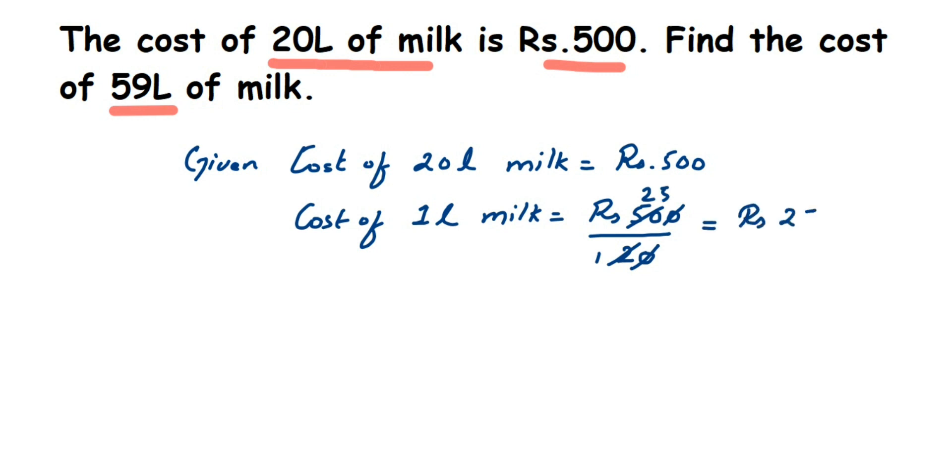So we have got that for 1 liter it is 25 rupees. Then for 59 liters what will be the cost? You have to just multiply. 1 liter we got 25 rupees, so for 59 liters it will be multiplication, 59 into 25.